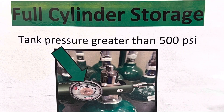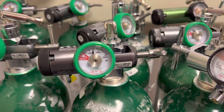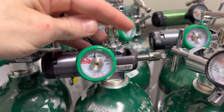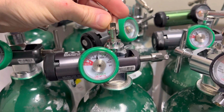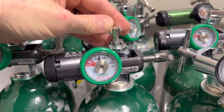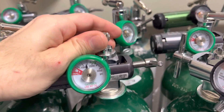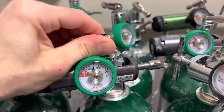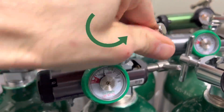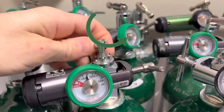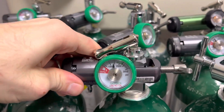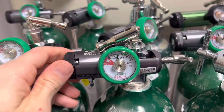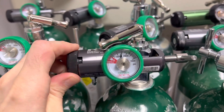First, select an oxygen tank from the full cylinder storage rack. Per OSHA regulations, the tank valve should be closed or off when not in use. Begin by rotating the toggle counterclockwise at least one full turn, then rotate the flow regulator knob to the desired flow setting.